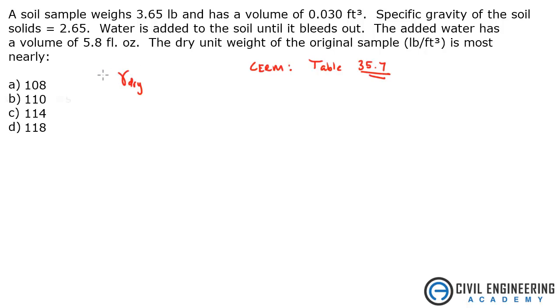So our goal is to find gamma dry. And in that table, it basically says that gamma dry equals gamma sat (saturated) over 1 plus water content. So what we need to do is solve for each of these variables.